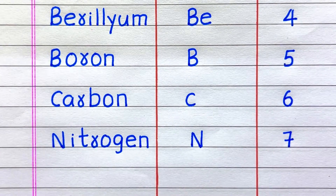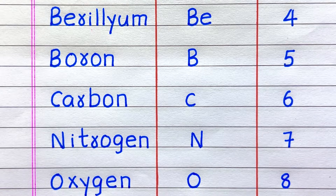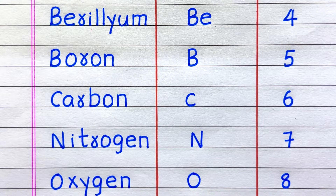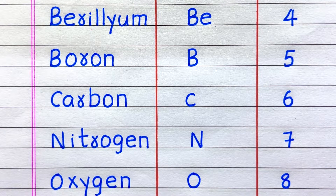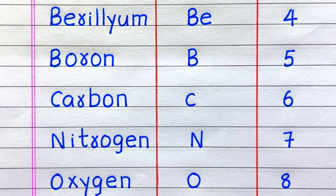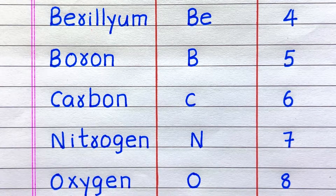The fourth element is Beryllium, symbol Be, atomic number 4. Fifth, Boron, B, 5. Sixth, Carbon, C, 6. Seventh, Nitrogen, N, 7. Eighth, Oxygen, O, 8.